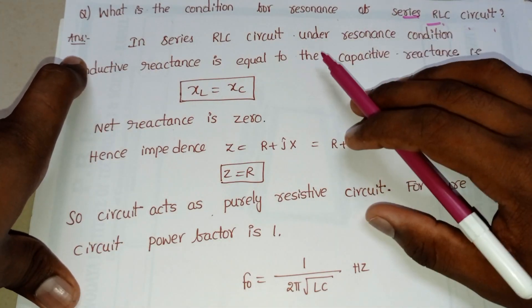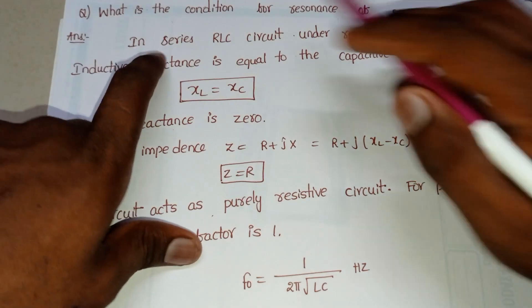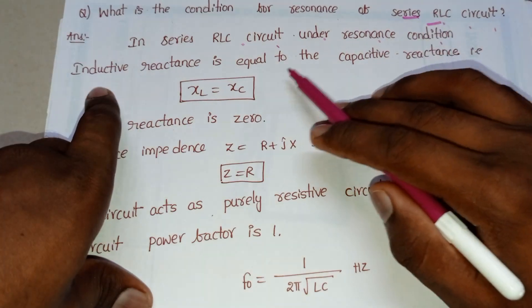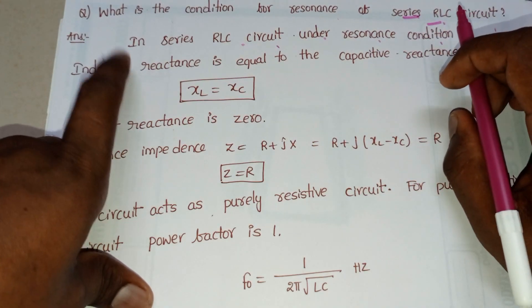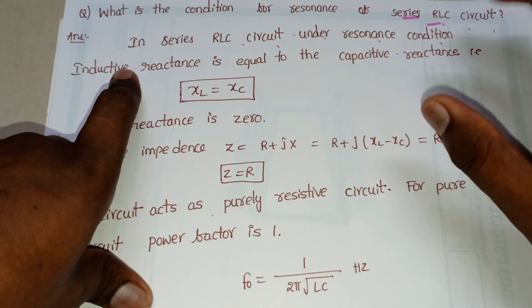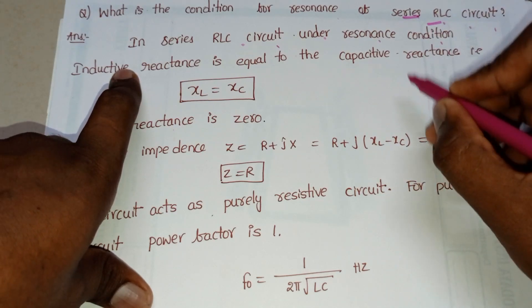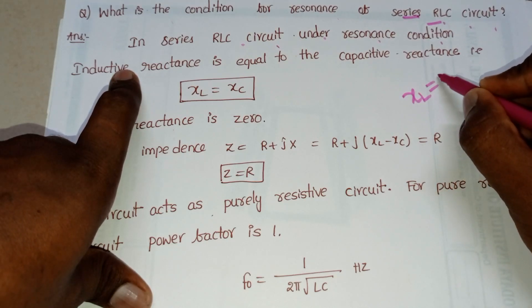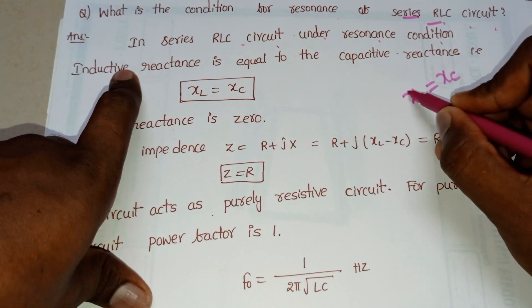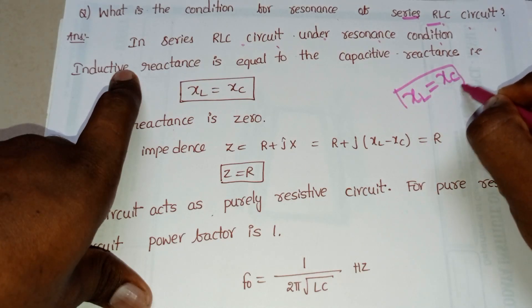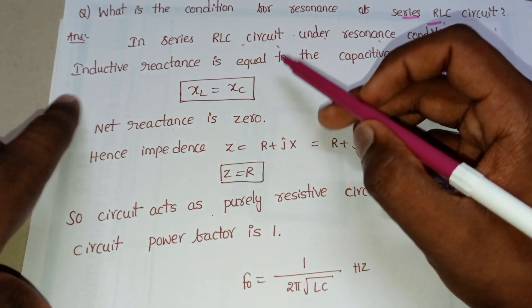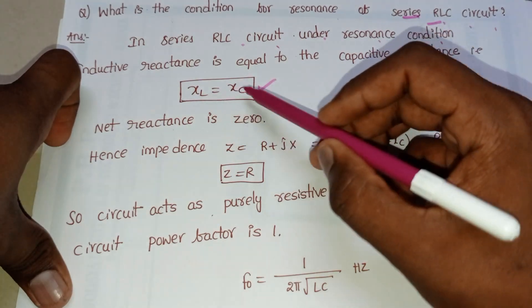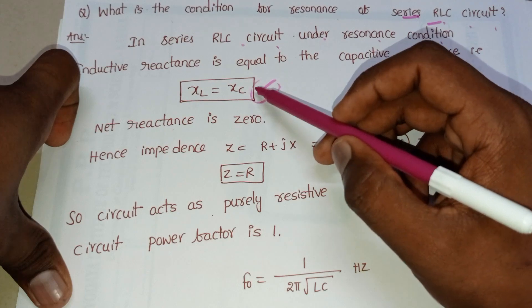In a series RLC circuit under resonance condition, inductive reactance is equal to capacitor reactance. Resonance occurs whenever inductive reactance XL equals capacitor reactance XC. The circuit must satisfy the condition XL equal to XC — only then is the series RLC circuit known as a resonance circuit.